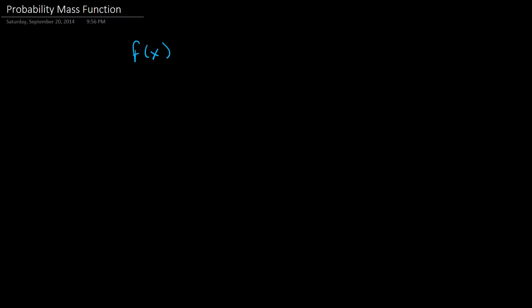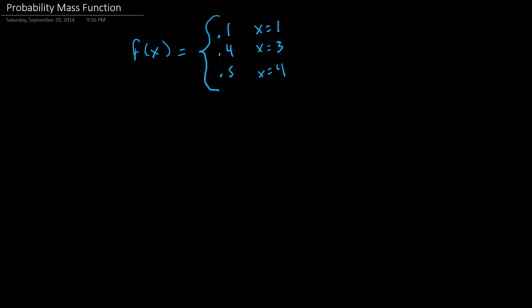You might see something like this. So we could say f of x is going to be 0.1, 0.4, and 0.5. And we could say when x is equal to 1, x is equal to 3, x is equal to 4.